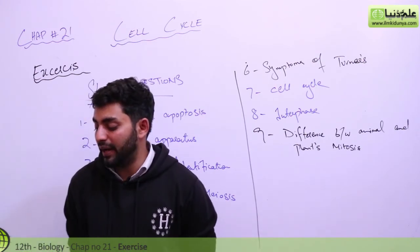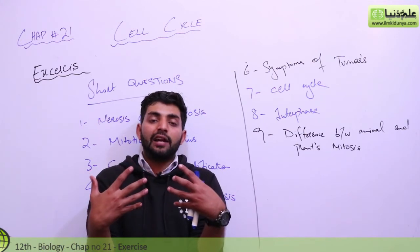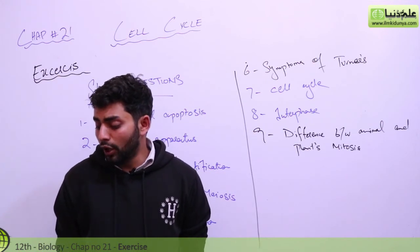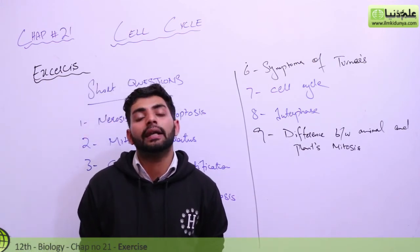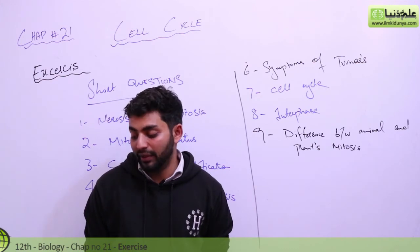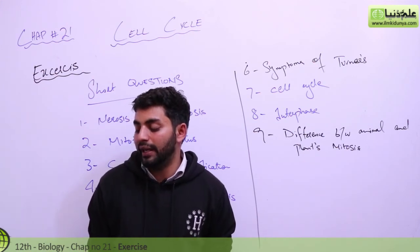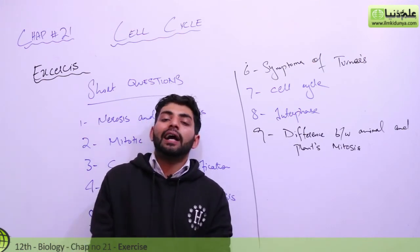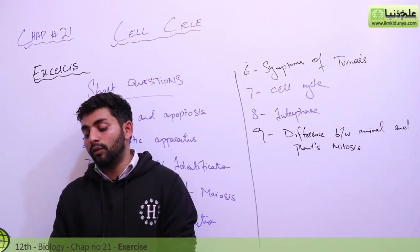Tenth question: why and how do chromosomes get separated during anaphase of mitosis? Spindle fibers are attached to the chromosomes via the centromere, and they pull the chromosomes apart. Eleventh question: what is the role of the centriole in animal cells? Centrioles form centrosomes, which ultimately produce the spindle fibers. Twelfth question: in what respect can cell death be regarded as beneficial? When cells get old, new cells cannot be made unless old cells are removed, so old cells must be eliminated.